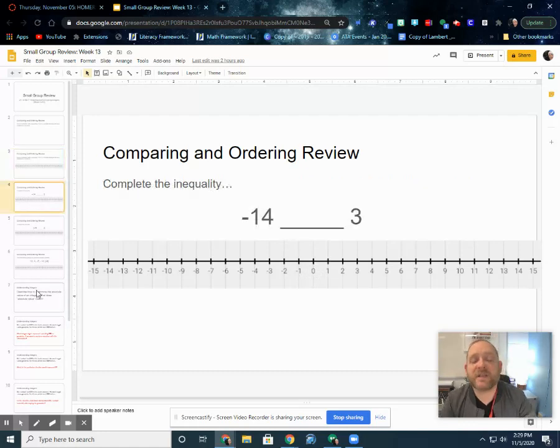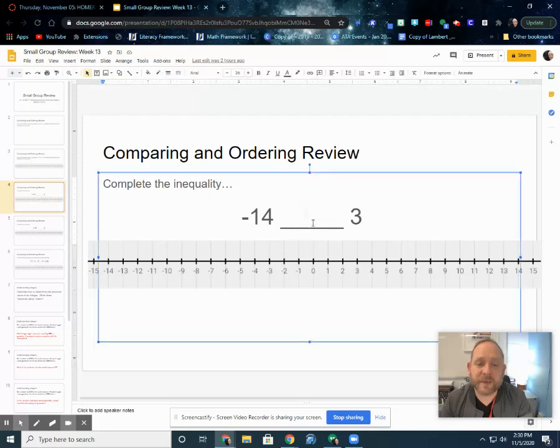And then complete this inequality. -14 less than, greater than, or equal to 3. Well, on our number line, -14 falls way over here on the left-hand side. 3 is right here, fairly close to 0, but on the right-hand side of our number line. And because anything to the right on our number line is bigger than the things that are to its left, this would be less than. -14 would be less than 3.